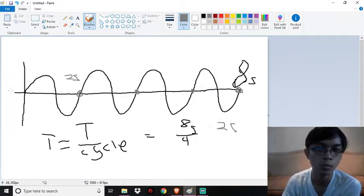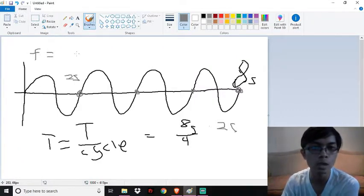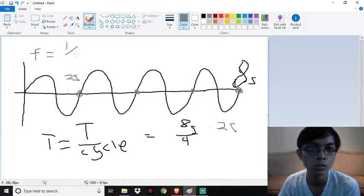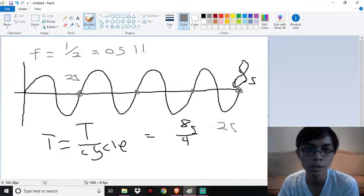Now we have to calculate the frequency by using the 2 seconds as our cycle per second, so 1 over 2 cycles per second which is 0.5, and 0.5 would be our hertz.